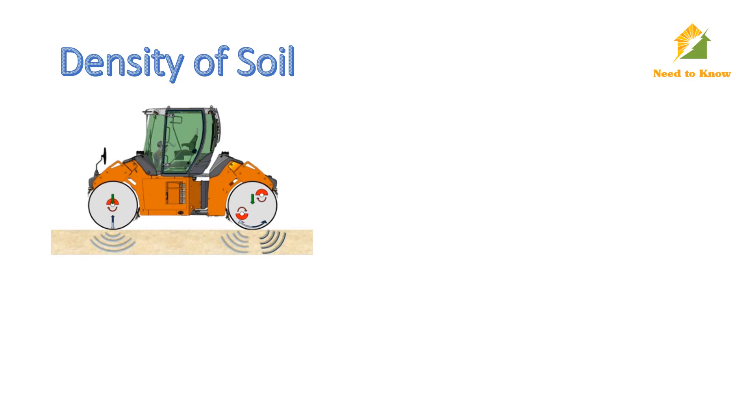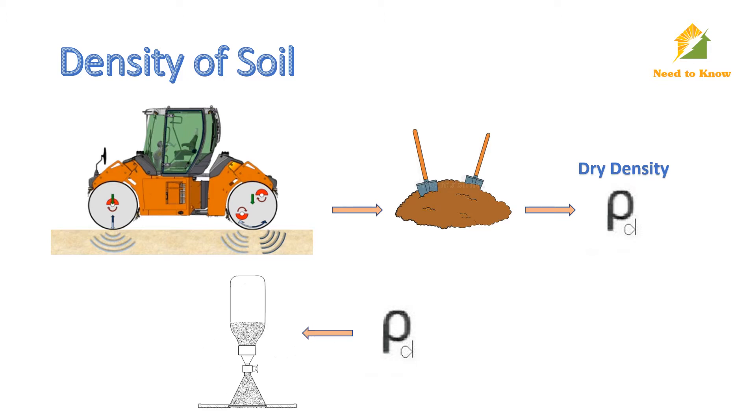To evaluate the degree of compaction of soil or a pavement, it is important to know the dry density of soil. For measurement of dry density, the commonly used methods are Sand Cone Method and Core Cutter Method, depending on the soil type.